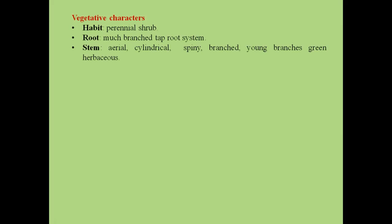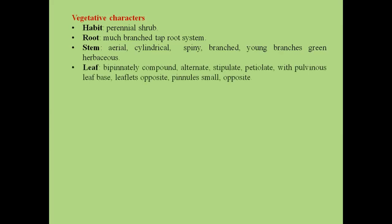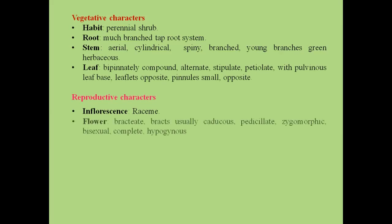The stem is aerial, cylindrical, spiny, and branched. Young branches are green and herbaceous. Leaves are bipinnately compound, alternate, stipulate, petiolate with pulvinate leaf base. Leaflets are opposite; pinnules are small and also arranged oppositely. Inflorescence is a raceme; flowers are bracteate, bracts usually caducous, pedicellate, zygomorphic, bisexual, complete, and hypogynous.